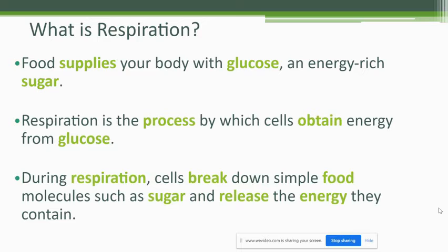Cells take that sugar and use it to create the energy they need, and then they produce different materials. Just like photosynthesis produces oxygen, respiration is going to produce carbon dioxide. During respiration, the cells break down simple food molecules such as sugar and release the energy they contain, so that the cell continues to be able to function and produce what it needs to.